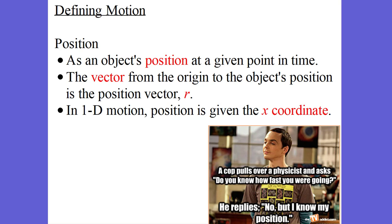Here we're going to be defining motion. The first definition of motion that we want to take a look at is position. An object's position is where it is at any given point in time. It's a vector quantity, which means it has both magnitude and direction. It comes from the origin to the object's position, and we're going to call that position vector r. In one-dimensional motion, the position is just given by the x-coordinate.